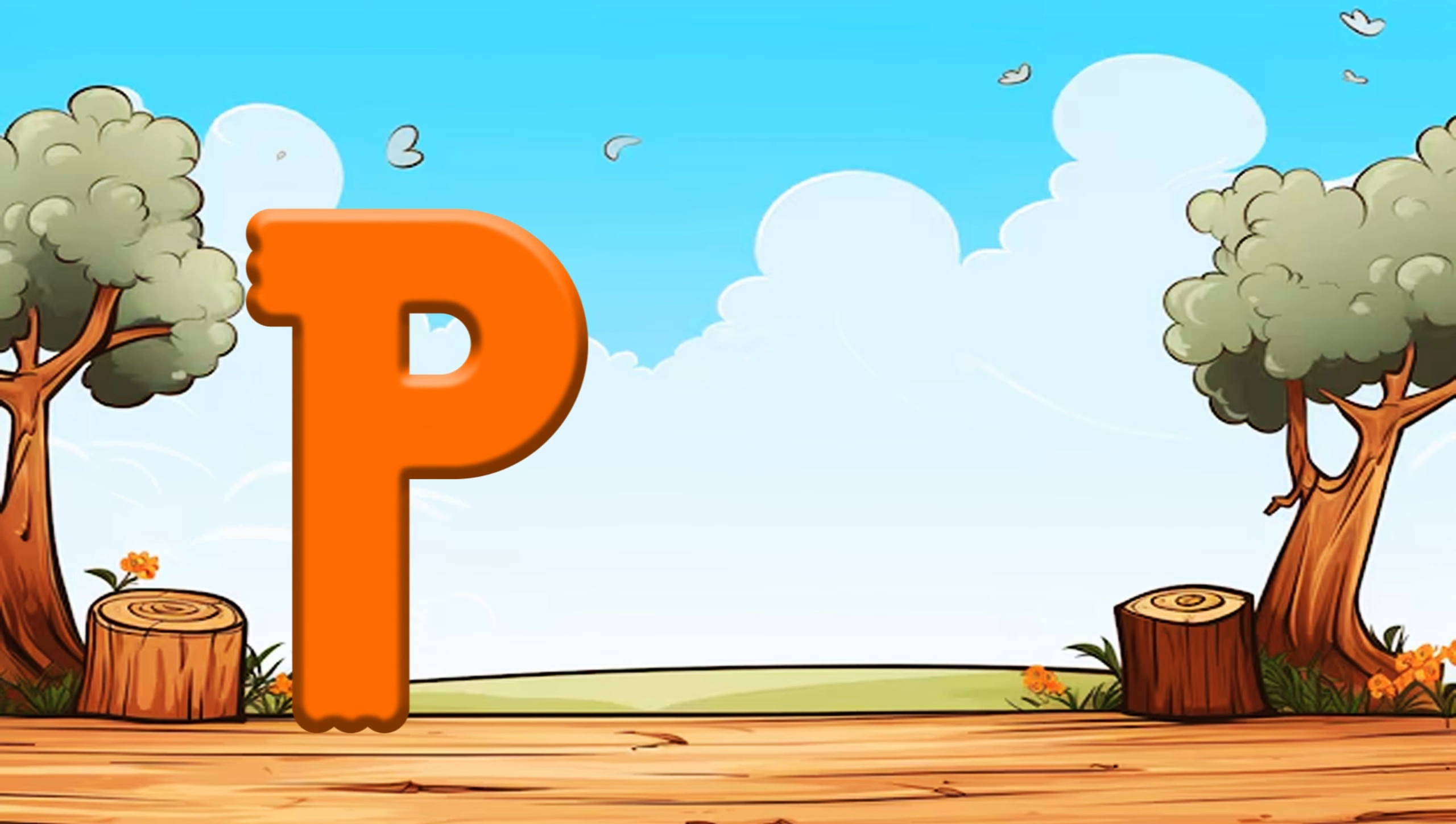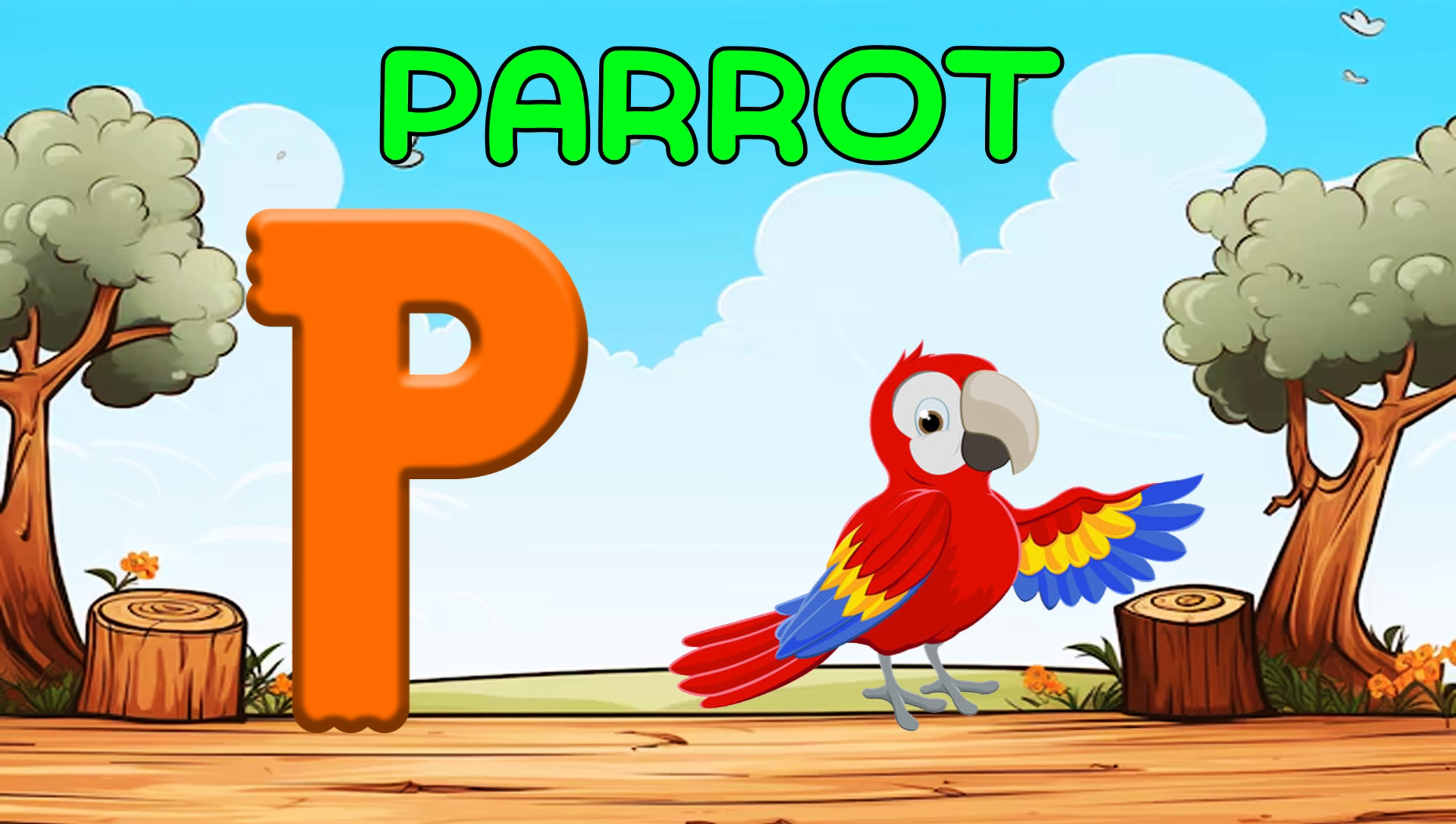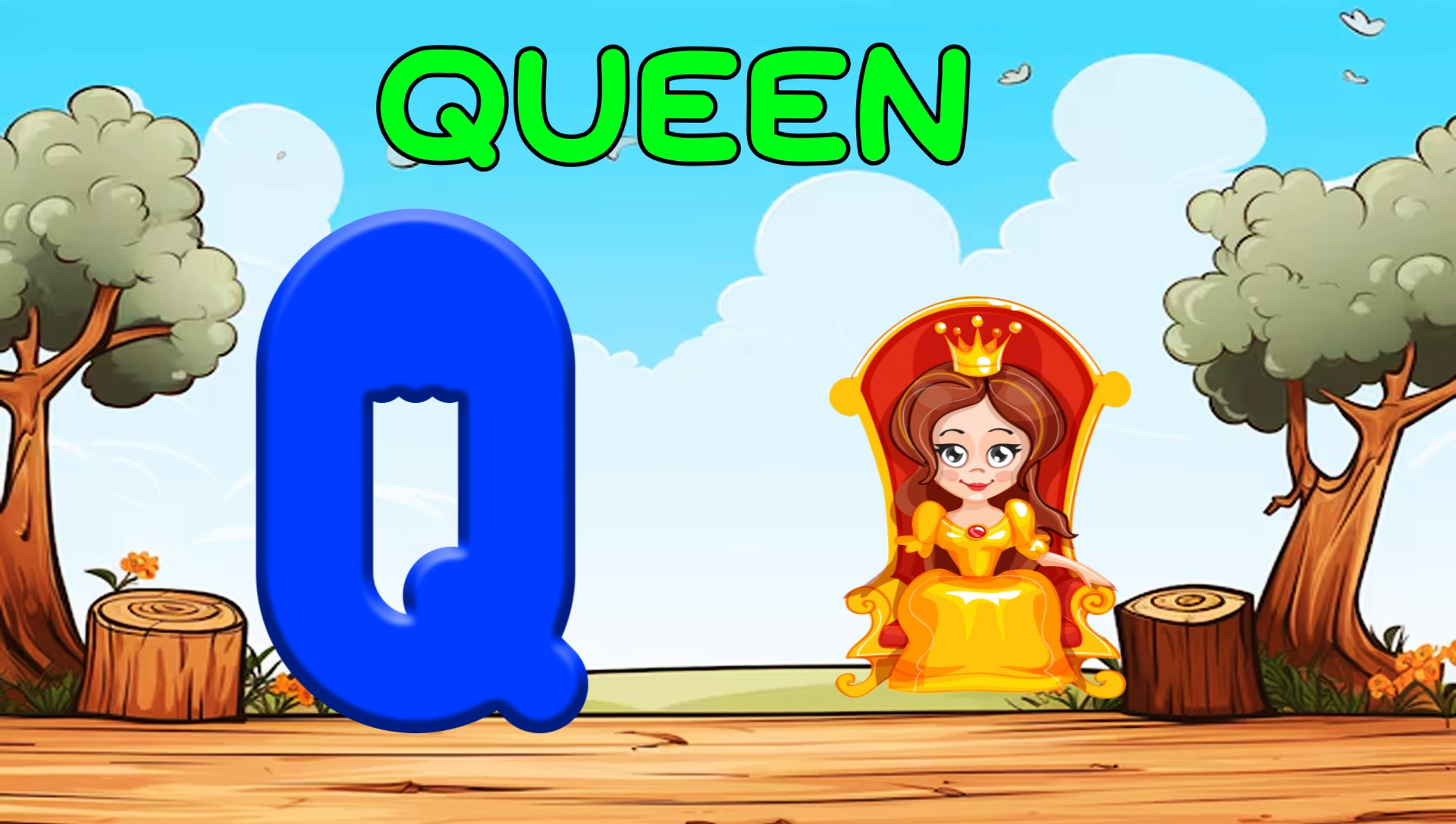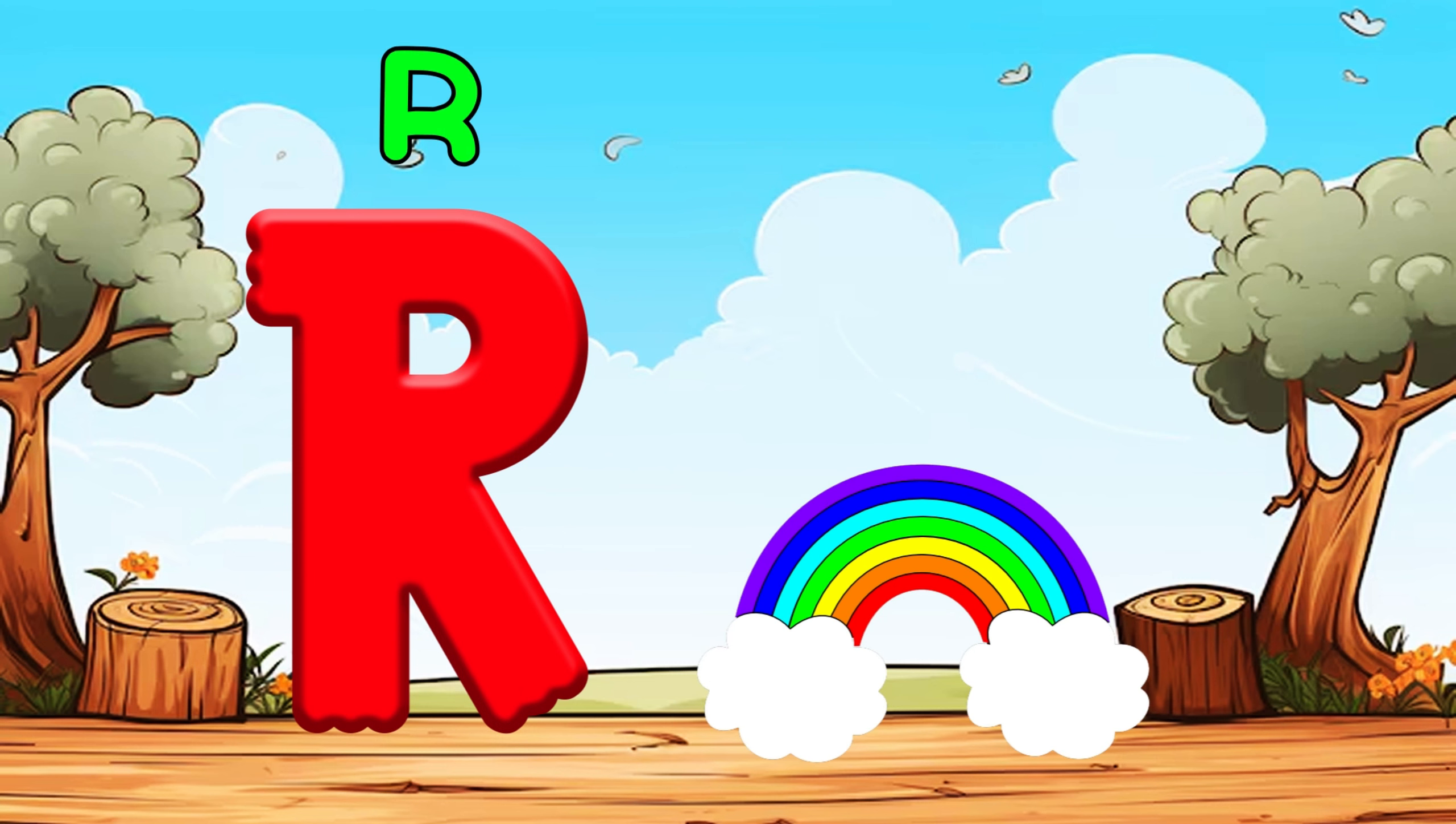P is for Parrot, Pa, Pa, Parrot. Q is for Queen. R is for Rainbow, R, Ra, Rainbow.